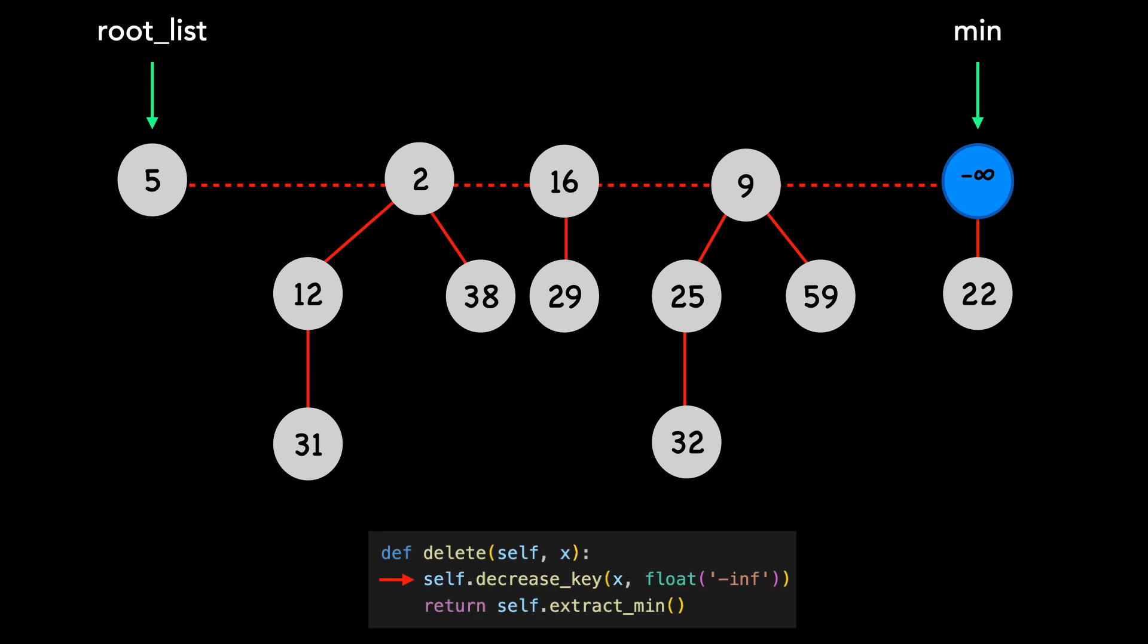We're now ready for extract min. Remember as part of this method, we perform consolidation. We take the blue node out, moving 22 to the root list. We set a new temporary min, which is 5.